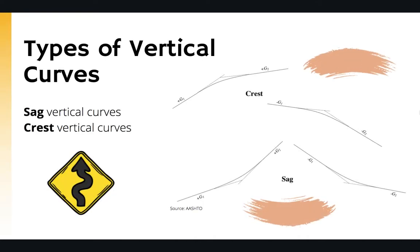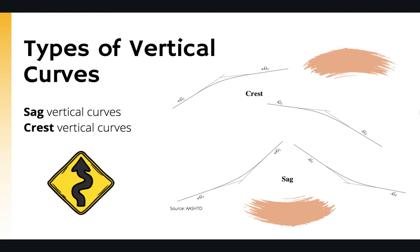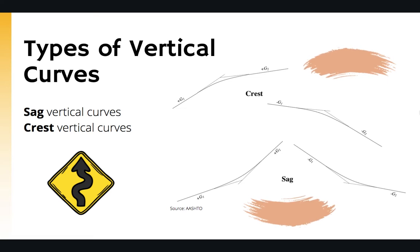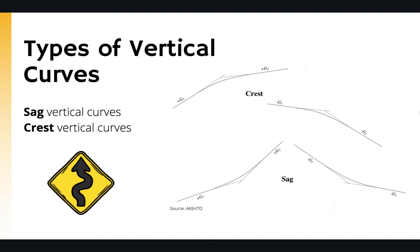There are two types of vertical curves based on their direction and how their curvature is pointing upward or downward. The first type is called a crest vertical curve, where the curvature is pointing downwards. The grades g1 and g2 can be both positive or both negative and we still have a crest curve. On the other side we have the sag curve, when the curvature is pointing upward, and similarly both g1 and g2 can be either positive or negative.